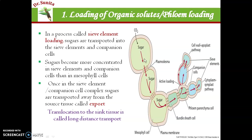This translocation from synthesis tissue to source tissue is short distance transport. But when transport takes place from the source sieve tube cell to the sink — जैसे synthesis leaf में हो रही है, requirement root में है — leaf से root में translocation में large distance है. इसे long distance transport बोलते हैं. तो loading की process में दोनों pathway involved हैं — short distance transport and long distance transport.